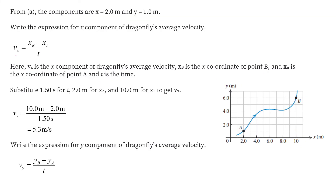We can write the value of Vx. The x coordinate at point B is 10 and the x coordinate at point A is 2. So the distance between them comes out to be 8, and it is covered in 1.50 seconds. So we write 8 divided by 1.50 seconds, which comes out to be 5.3 meters per second. We have found the x component of the dragonfly's average velocity.